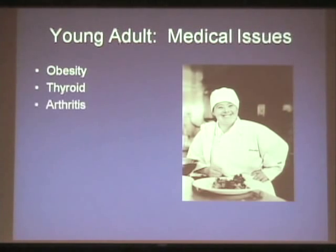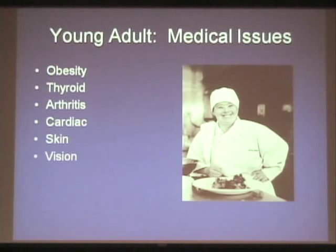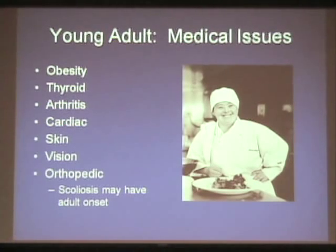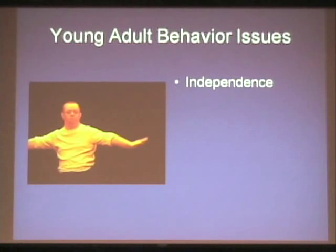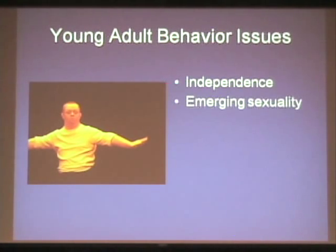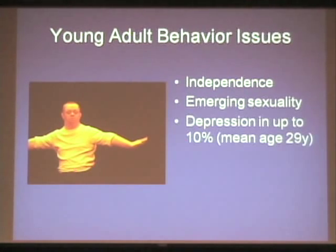Medical issues continue as people get older. Scoliosis, which is more common in childhood for typical children, continues occurring in adults with Down syndrome. Behaviorally, there's still the tension between independence and dependence, their desire for relationships, and emergent sexuality.